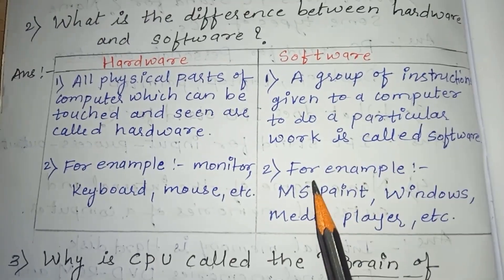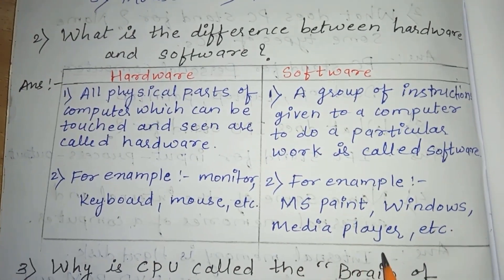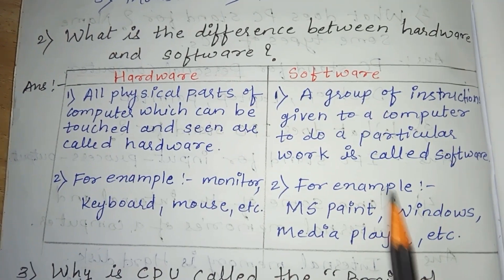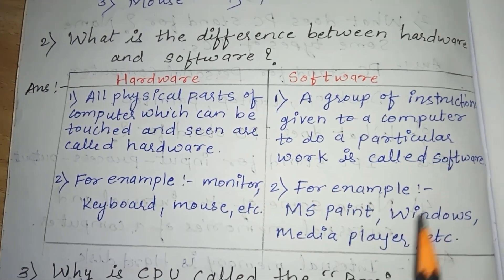For software examples, we have MS Paint, Windows, Media Player, etc. We can paint in MS Paint. We cannot physically touch software — we can only use it.